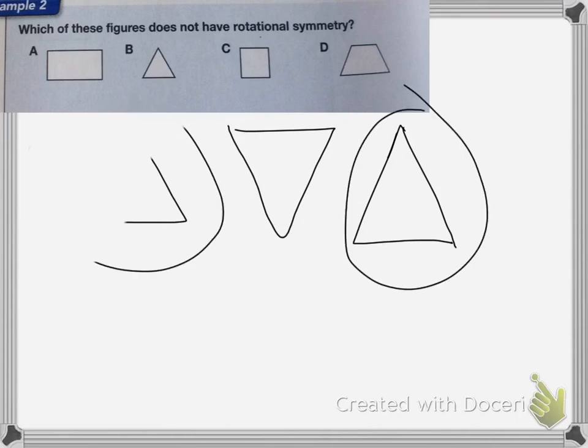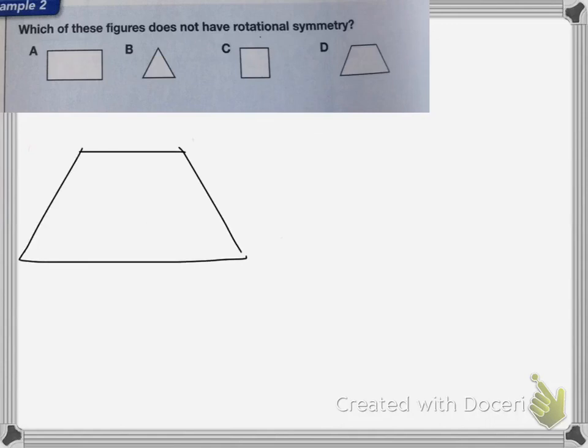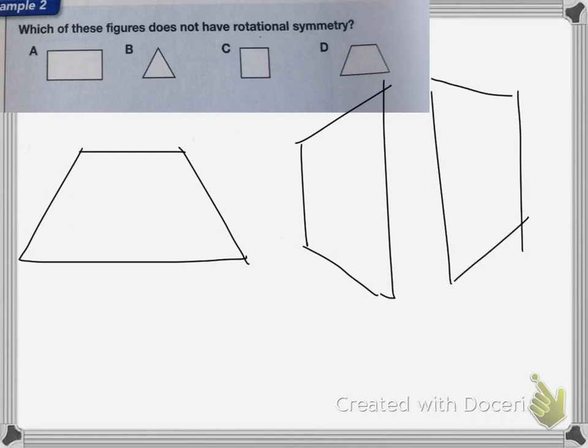And then the trapezoid, if I rotate it, I end up looking like this, which is not the same, it looks like this, which is not the same, and finally 180 degrees looks like this.